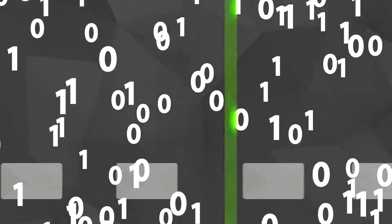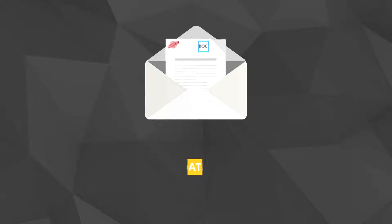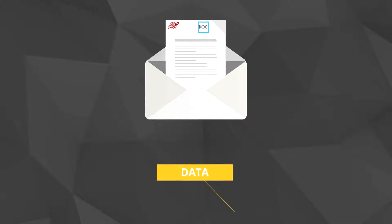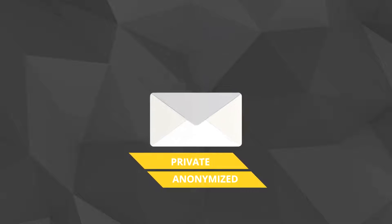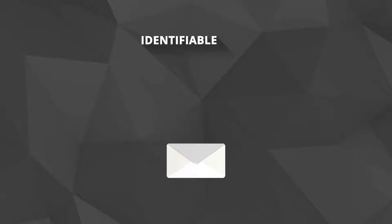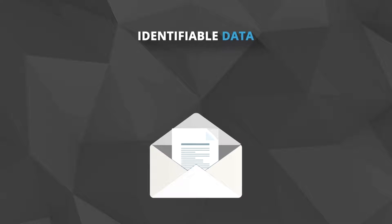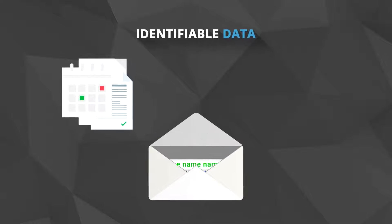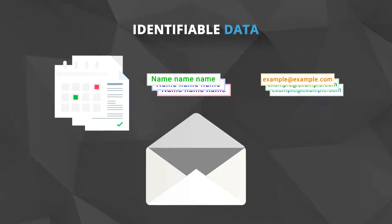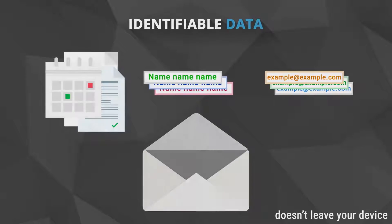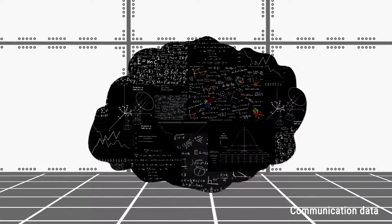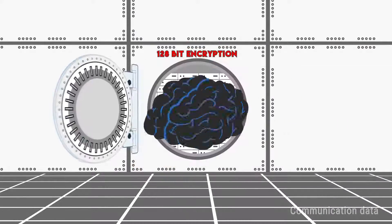We minimize the risk of data exposure by dividing the data into two areas: private identifiable information, and anonymized statistical information about communication habits and behaviors. Identifiable data such as personal information, names, email subjects, documentation, etc., doesn't leave your device. The communication data gets statistical information extracted.